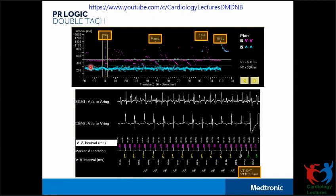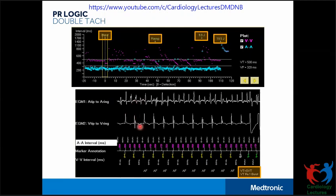In this double tachycardia plot, the atrial rate is faster than the ventricle and quite irregular, while the ventricular rate is quite regular. Comparing the association, they are completely dissociated. Looking at the EGM, atrial beats are more than ventricular beats. The device calls this 'VT plus SVT.' The device classified it as VT because the VT rate was quite regular, and in this example the device gave burst therapy, then a ramp, then two shocks, after which the arrhythmia stopped and returned to normal sinus rhythm.